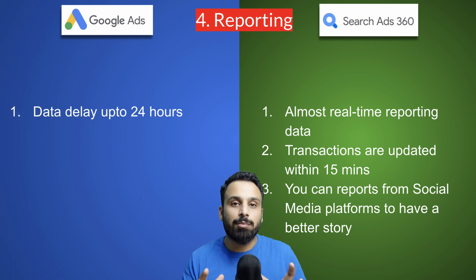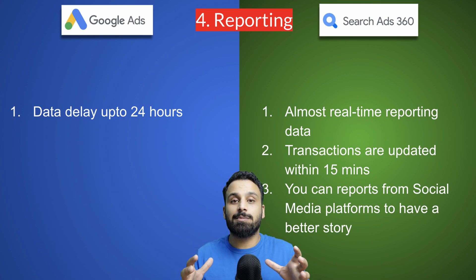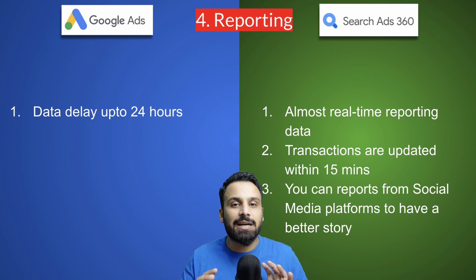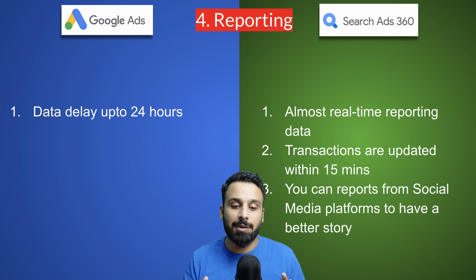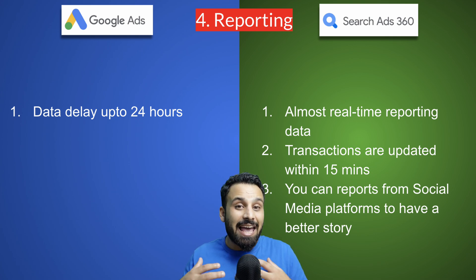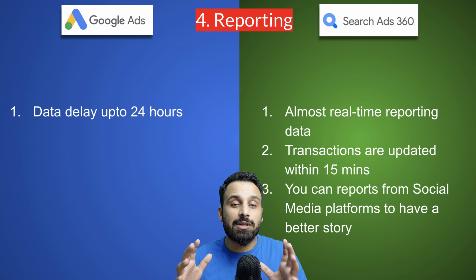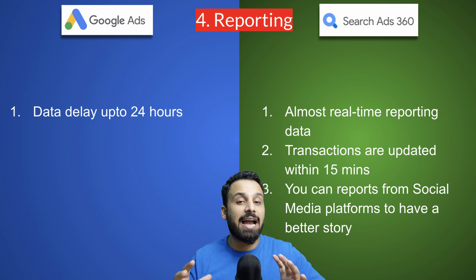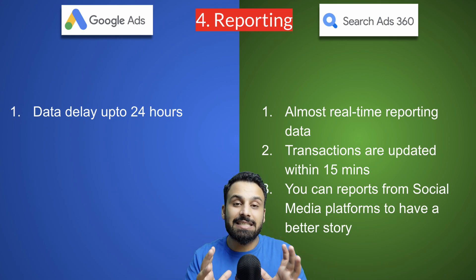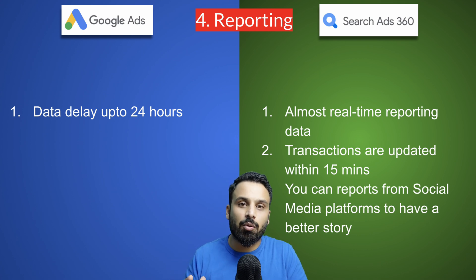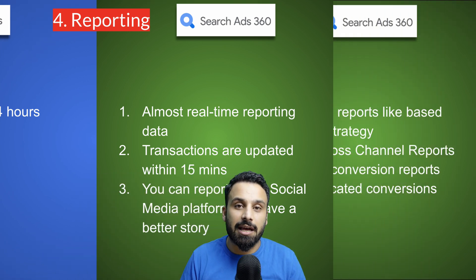The fourth difference is reporting. In Google Ads, you can see a delay of up to 24 hours in reporting. In Search Ads 360, you get almost real-time reporting — for example, for an e-commerce website, every transaction will be recorded and reflected in reports within 15 minutes at most. Additionally, in Search Ads 360 you can share your Floodlight tags across Facebook and Twitter ad accounts, allowing you to report holistically in one platform.